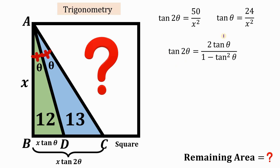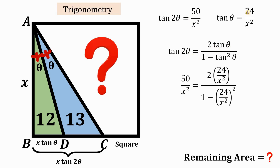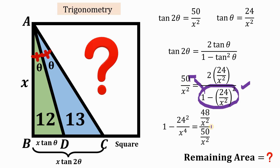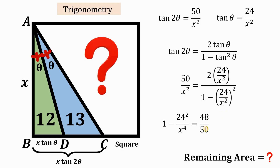Replacing tan(2theta) with 50/x² and tan(theta) with 24/x², we cross-multiply and simplify. Multiplying numerator and denominator by x², the right-hand side simplifies to 48/50, which further reduces to 24/25.